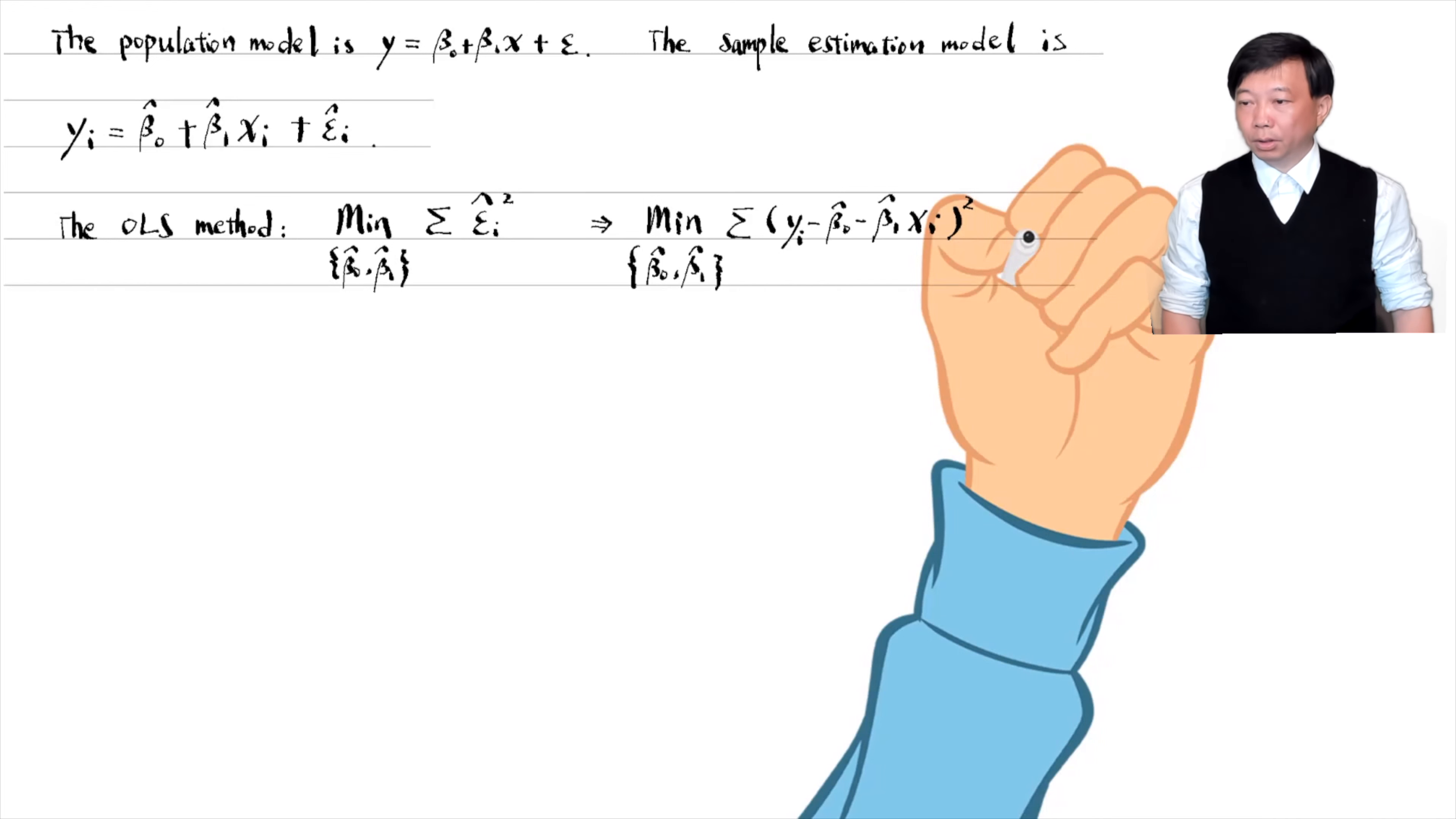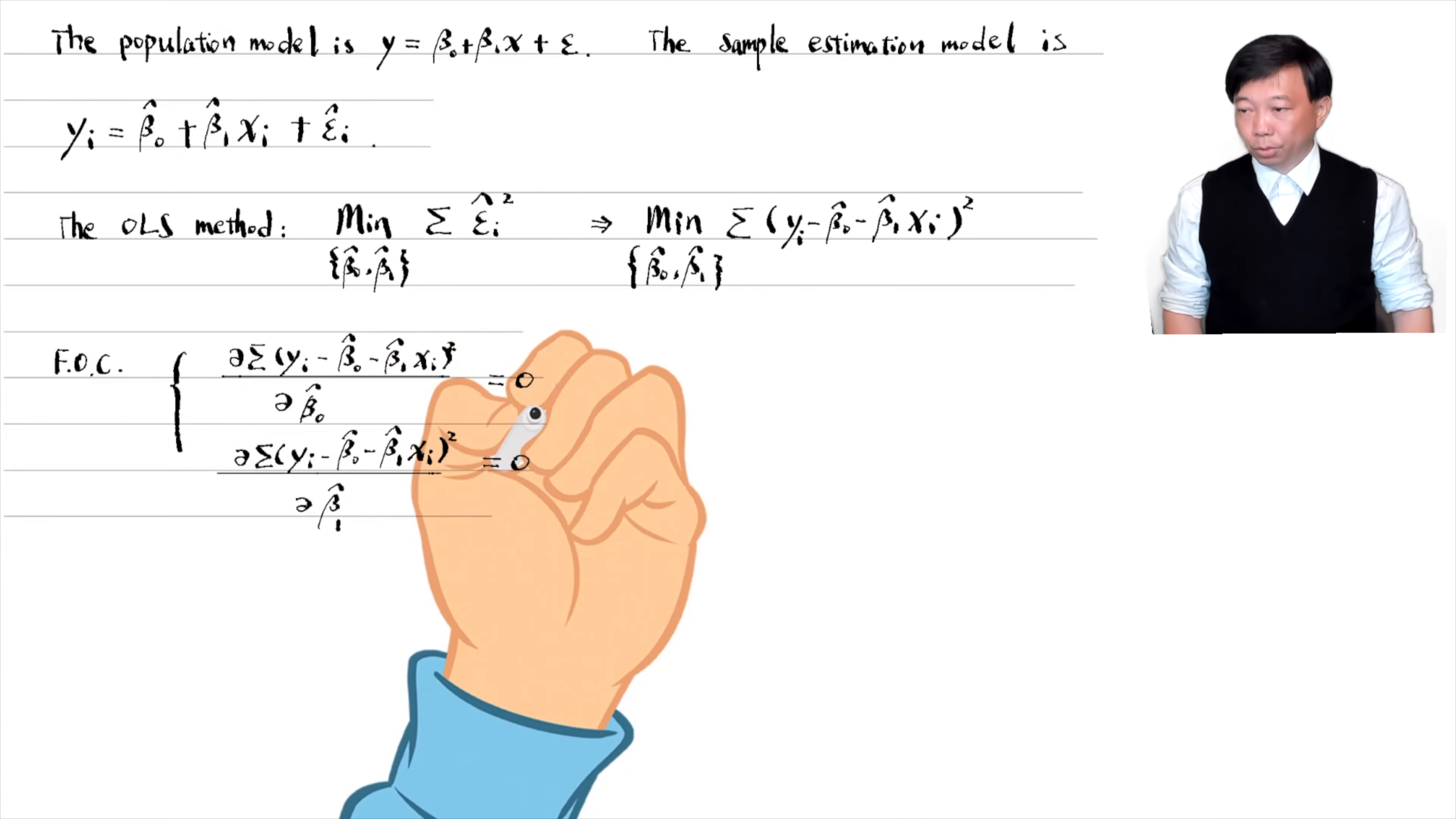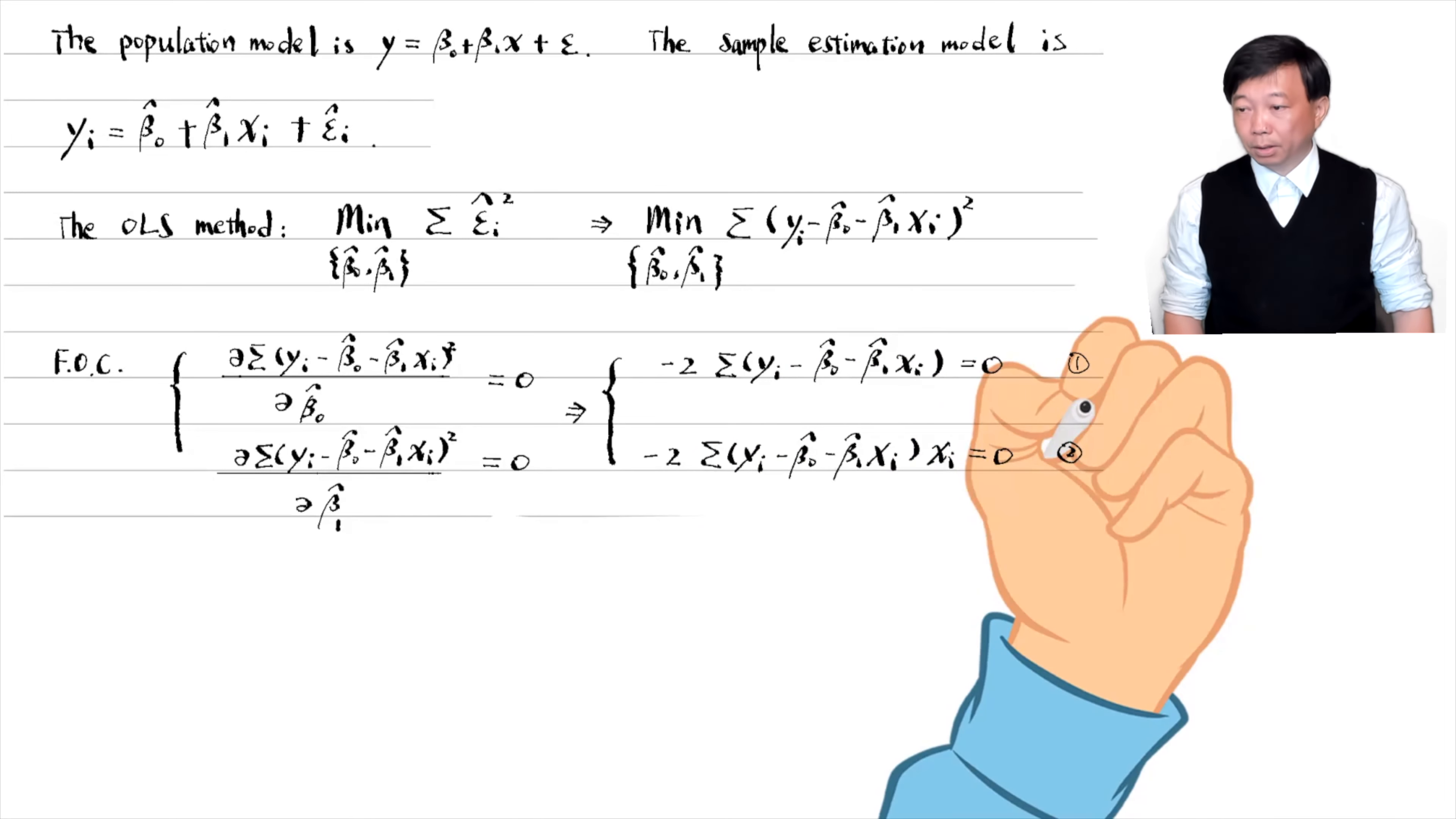The first order conditions for minimization are as follows. The derivative of the sum of square residuals with respect to beta 0 hat and beta 1 hat equals 0 respectively. They lead to two OLS normal equations.